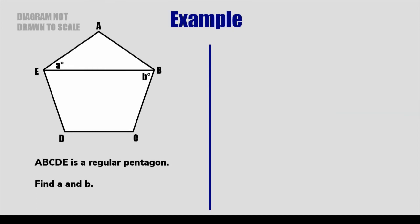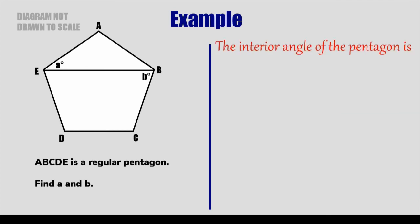Here we have a diagram, not drawn to scale, but it shows a regular pentagon. We've got to find the angles A and B. The interior angle of the pentagon is found - well, if it's a regular pentagon, the easiest way to do it is subtract the exterior angle from 180 degrees. And the exterior angle of a pentagon is 360 divided by 5. So it will be 180 subtract 360 divided by 5, which gives the answer 108. So that angle up at the top, that A, is definitely 108 degrees. And of course that triangle ABE is an isosceles triangle because AB and AE are both the same length.